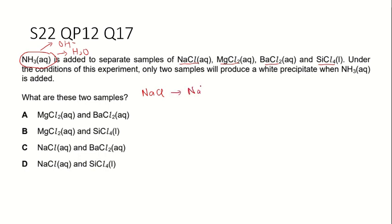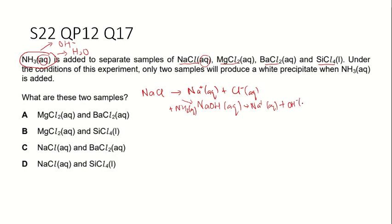In an aqueous solution of sodium chloride, it contains sodium ions and chloride ions. When ammonia is added to sodium chloride solution, sodium will react with the hydroxide ion to form NaOH. NaOH is soluble in water, so we get free moving sodium ions and free moving hydroxide ions — no precipitate will be produced. So NaCl will not give a white precipitate when ammonia solution is added.